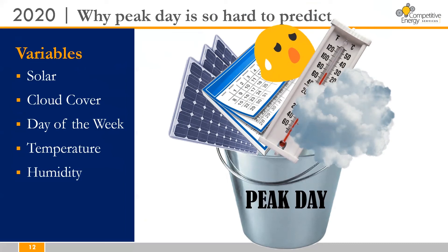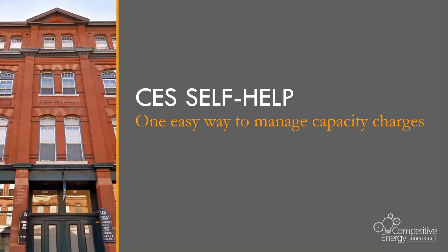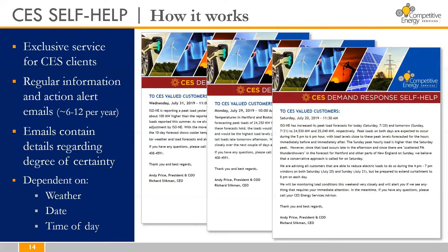So this all raises the question: how is an electricity user supposed to keep track of all these factors and respond to a possible peak event? Well, that's where Competitive Energy Services comes in. In this last section, I'll tackle CES self-help, which is one easy way to manage your capacity charges. CES self-help is an exclusive service for CES clients, whereby we provide regular information and action alert emails to notify customers when a possible peak event is on the horizon. We provide detailed guidance on the likelihood of a peak event, outlining all the contributing factors. This slide is a sample of the messaging we deliver to our clients between six and 12 times a year, depending on how the weather's looking.